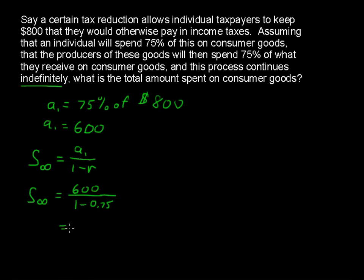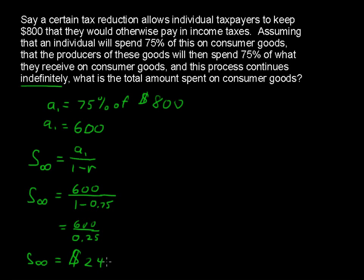So that equals 600 divided by 0.25. And the answer — the short answer is — from that original $800 tax reduction, we get $2,400 spent in the economy on consumer goods.